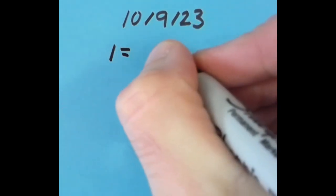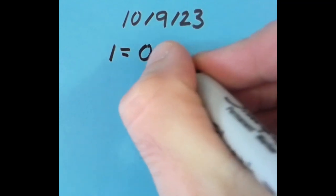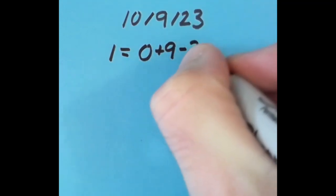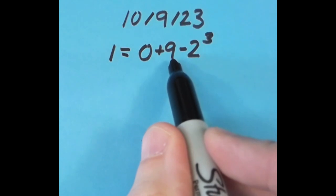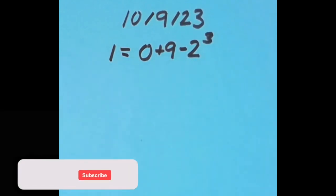What I did was 1 equals 0 plus 9 minus 2 to the third power. 2 to the third power, that's 2 times itself 3 times, so that gives us 8. And 9 minus 8 is 1, so we have 0 plus 9 is 9, minus 8 is 1, and that's what I did.